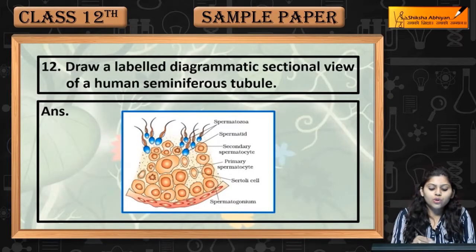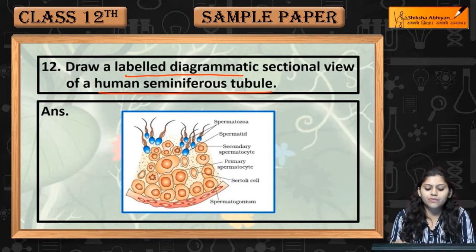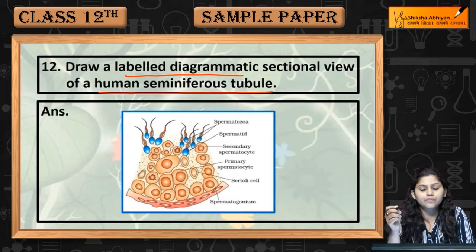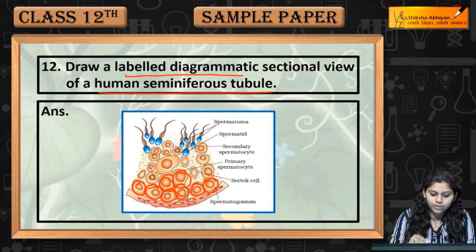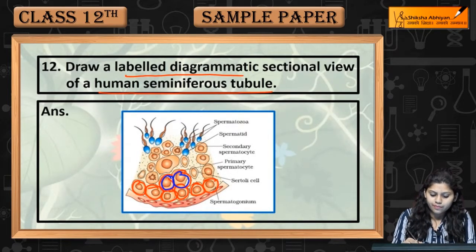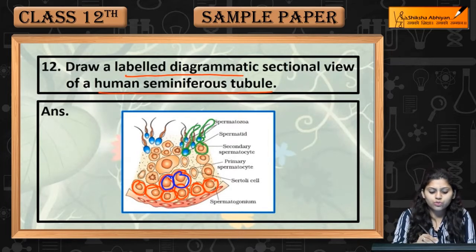Question number 12: draw a labelled diagrammatic sectional view of the human seminiferous tubule. Have a look — these are spermatogonium, these are primary spermatocytes, these are secondary spermatocytes, spermatids, and spermatozoa.